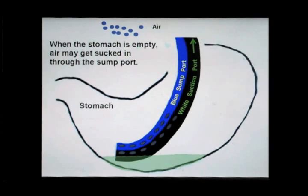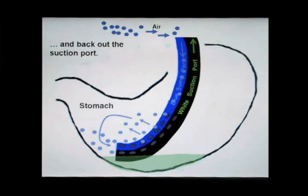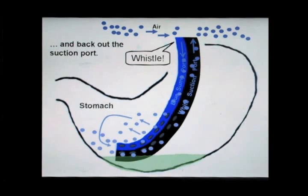When the stomach is empty, air may be aspirated in through the sumping port and back out the suction port. This may result in the appearance of a whistle created by air being sucked in through the sumping port. Such a whistle ensures that the sumping action is occurring.